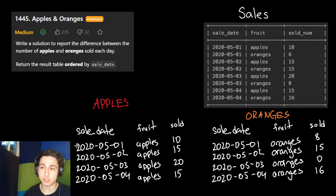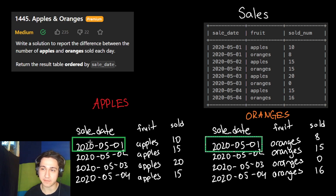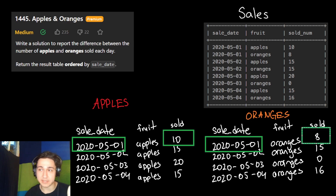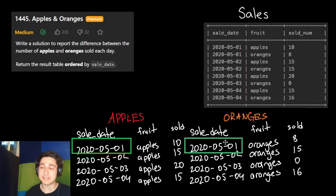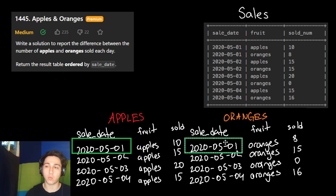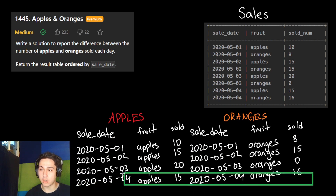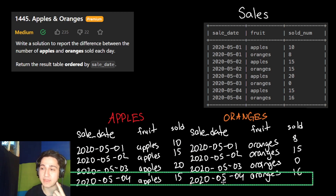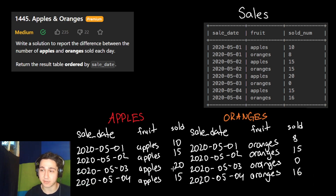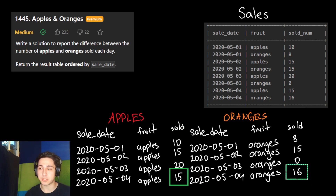Because these rows are already ordered by sale date, it becomes easy to visualize a potential solution. We could hypothetically join these two tables together where the sale date matches. If it's May 1st in the apples table and May 1st in the oranges table, we want to compare how many were sold of each fruit, find the difference, and return that as a result. We'll have all our information on one line, which allows us to find the difference.